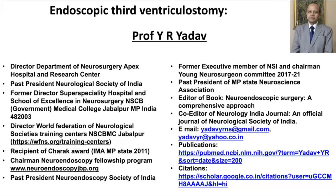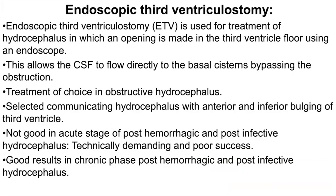I will be talking about endoscopic third ventriculostomy. Endoscopic third ventriculostomy is used for treatment of hydrocephalus in which an opening is made in the third ventricle floor using an endoscope. This allows CSF to flow directly from the basal cistern, bypassing the obstruction. This is the treatment of choice in obstructive hydrocephalus, and can also be used in selected communicating hydrocephalus with anterior and inferior bulging of the third ventricle floor.